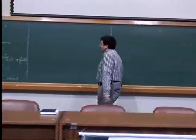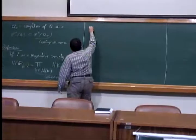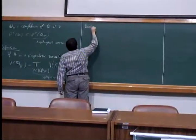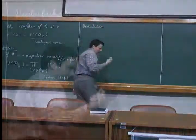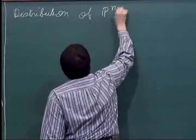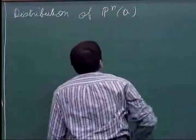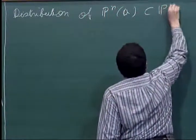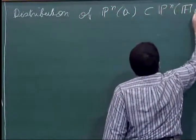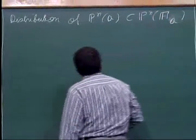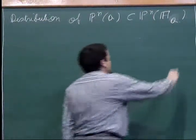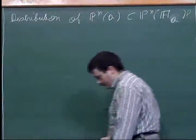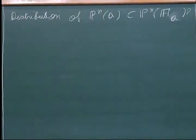So now, what is the distribution? One may ask: what is the asymptotic distribution of points of bounded height of P^n(Q) in the adelic points of the projective space? To answer this question, let me define a measure on the adelic space.